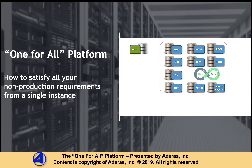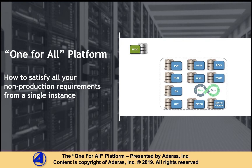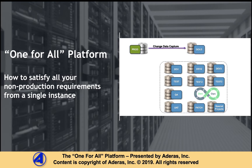The One for All platform avoids these pitfalls by introducing a new architecture. First, a single gold instance is created and we employ change data capture to keep the instance in sync with production. We then create all non-production instances as thin clones of the gold instance. A thin clone is the exact copy of the gold database at the time of the snapshot. A thin clone works like a regular database and is independent of the gold database, but since it shares storage with the gold database, it does not incur any significant storage at creation.